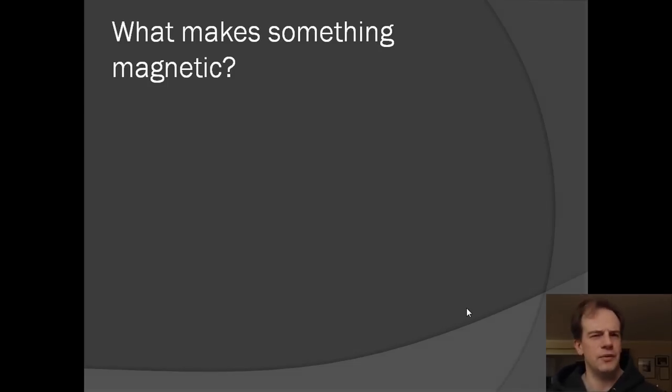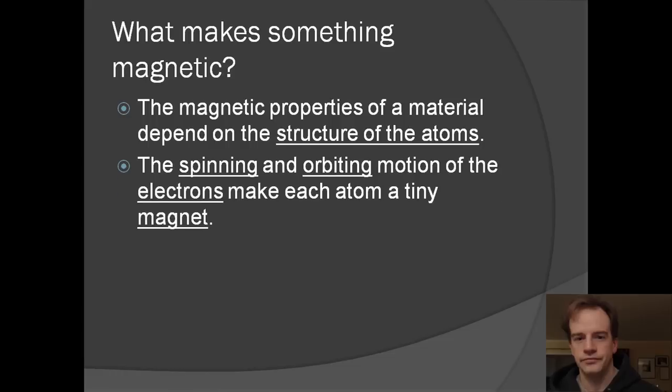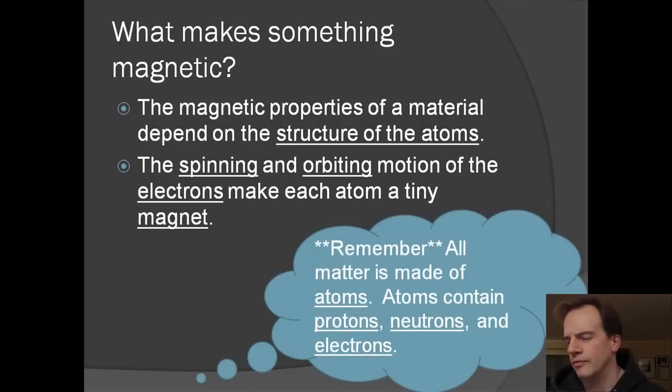So what is it that makes something magnetic? Well, this magnetism depends on the properties of the structures of the atoms. The spinning and orbiting motion of the electrons make each atom a tiny magnet. And remember that all matter is made up of atoms and atoms contain protons, neutrons, and electrons. So it's the number of electrons that will determine, along with the rest of its structure, whether it's magnetic or not or able to be a magnet.